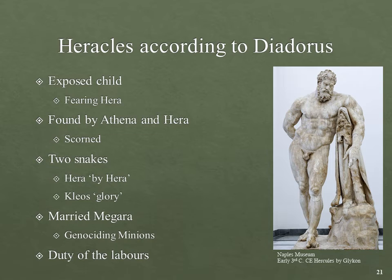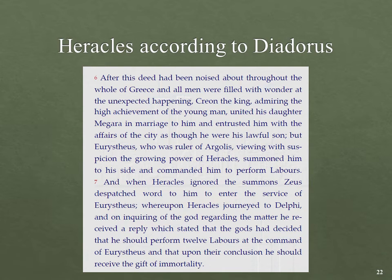Later in life, Hercules married Megara, and he married her after literally genociding a group of people called the Minyans. He murdered all of them — modern definition of genocide. The labors were a duty as previously discussed from birth.